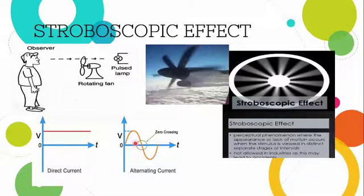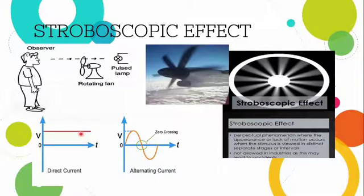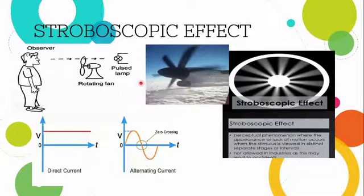On AC current, we have the zero-crossing effect, which produces a unidirectional wave for DC lamps. Regarding the stroboscopic effect, the rotating path and the lamp reflections are involved. The stroboscopic effect can be seen not only in fans but also in any rotating machine — such as a propeller or a rotating wheel. This unusual visual effect is also sometimes called the wagon-wheel effect.